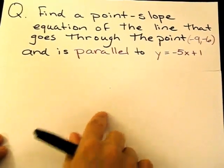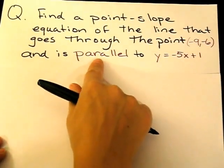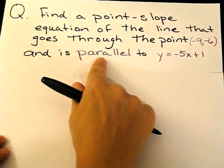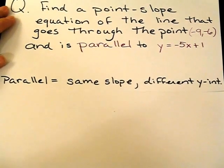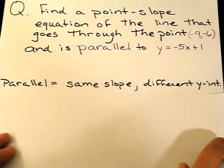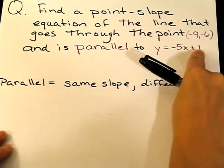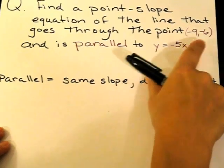The first thing I see about this question is that my new equation is going to be parallel to the one that's given. So to me, parallel is same slope, different y-intercept. Here's my slope, here's my y-intercept. So this is the same, this will change.